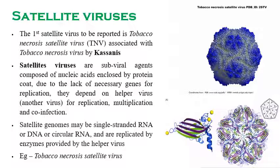Satellite viruses are dependent on another virus — called the helper virus — for replication, multiplication, and co-infection. With the help of the helper virus only can the satellite virus replicate and multiply, because they lack the necessary genes for these mechanisms.